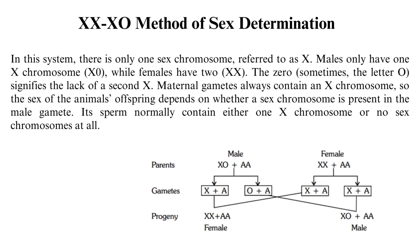In the XX and XO method of sex determination, there is only one sex chromosome, referred to as X. Males only have one X chromosome, while females have two. The zero — sometimes written as the letter O — signifies the lack of a second X chromosome.